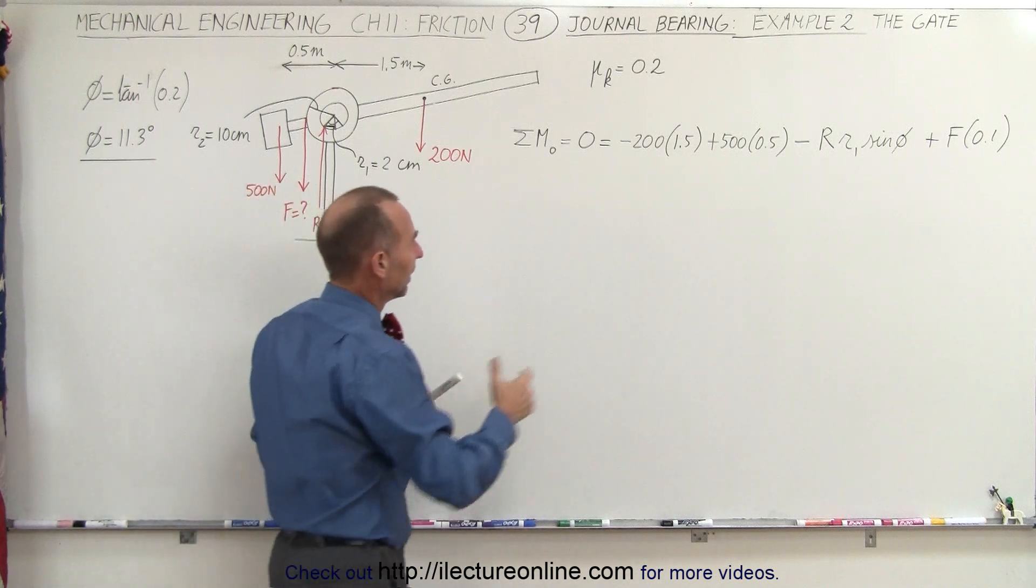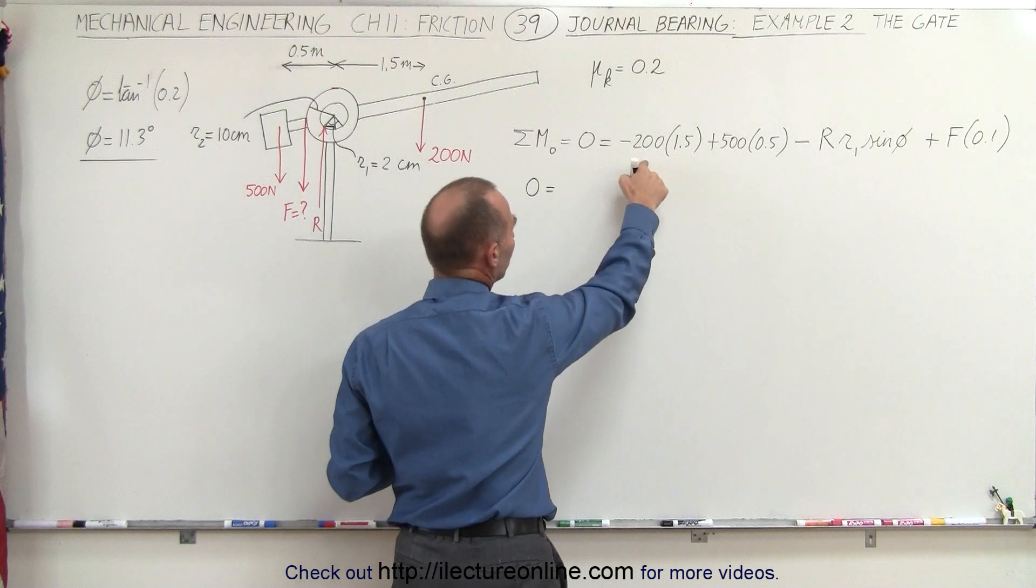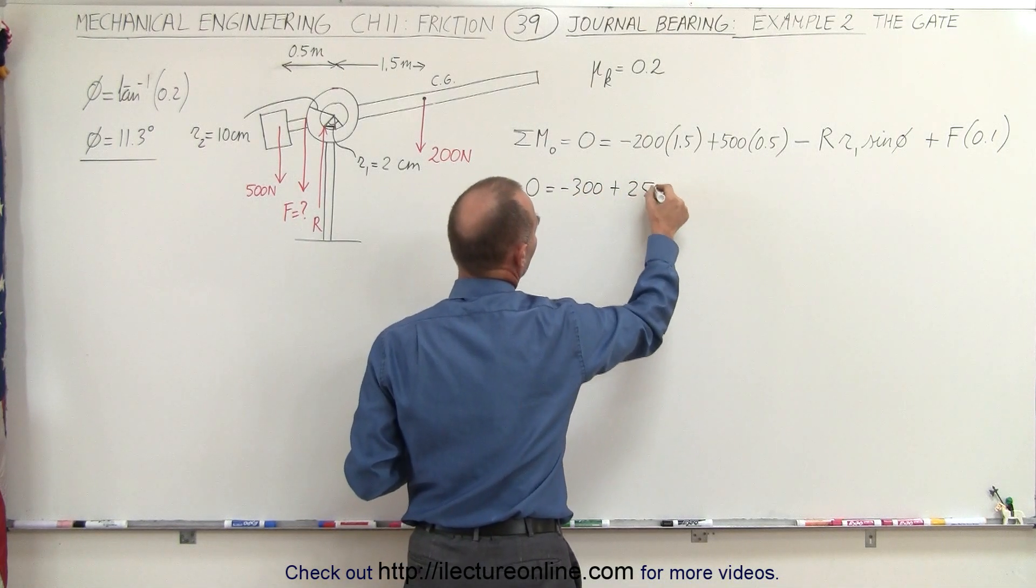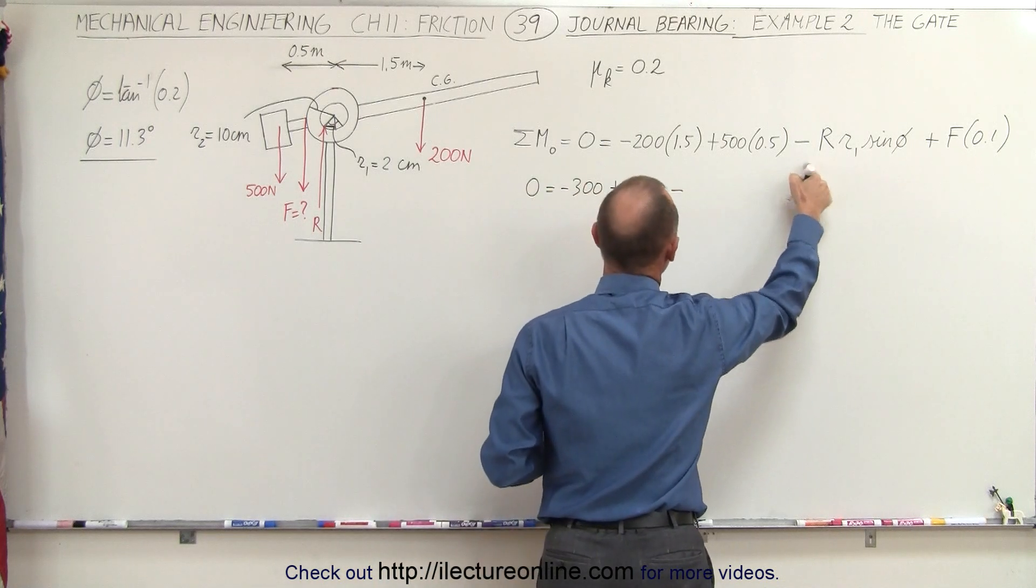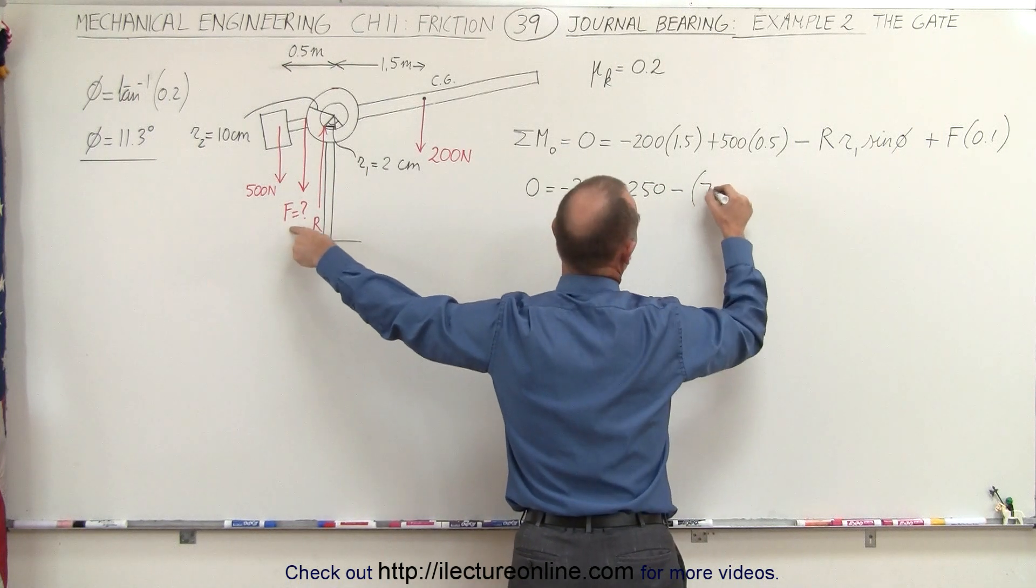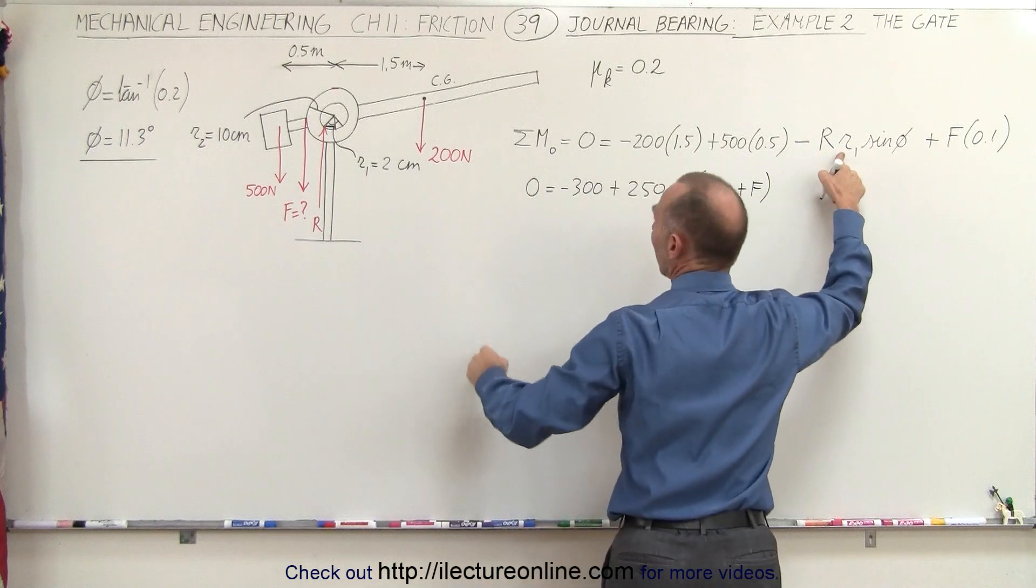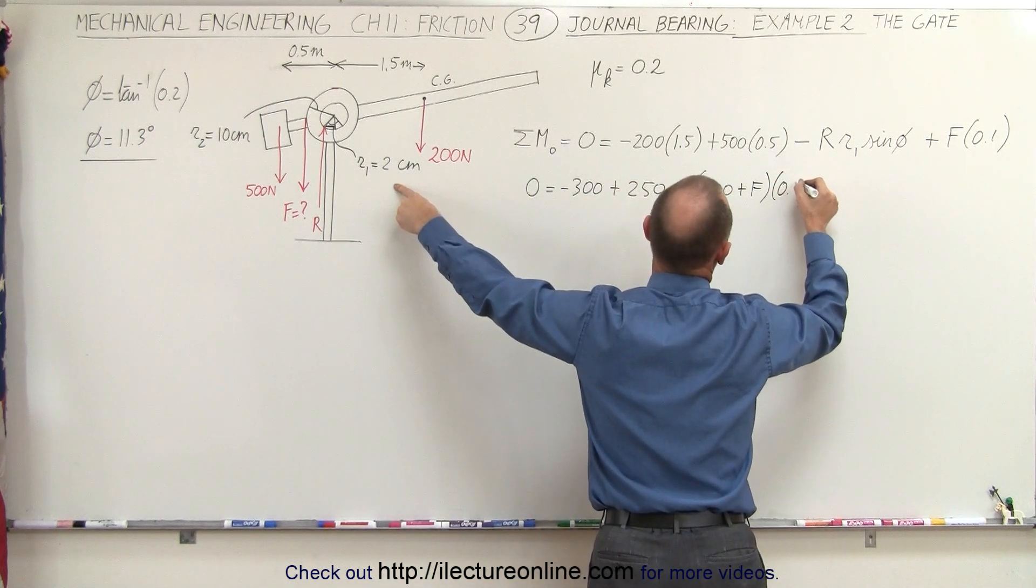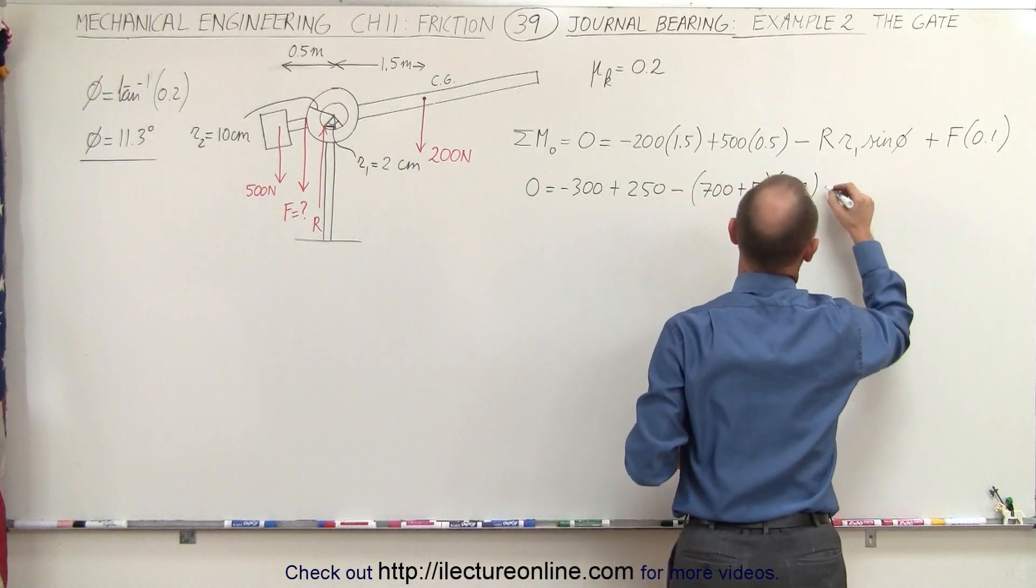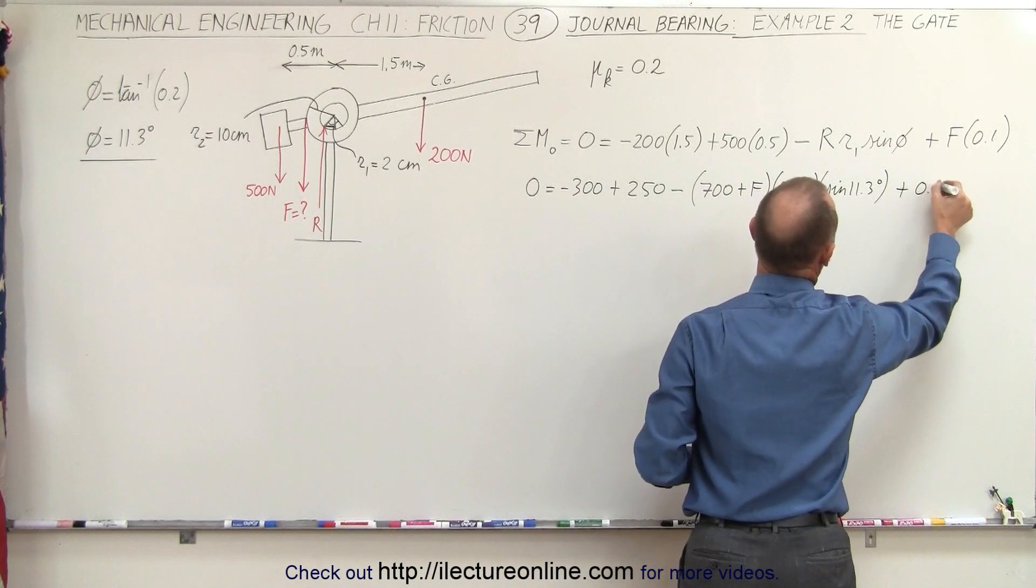So let's go ahead and plug that in, and simplify things a little bit here. So we get 0 is equal to minus 300 plus 250, and here we get minus R. Now, R is going to be the sum of the 700 N plus F. So it'll be 700 N plus F times R1, which is 2 centimeters, 0.02, times the sine of 11.3 degrees, and then plus 0.1 F.